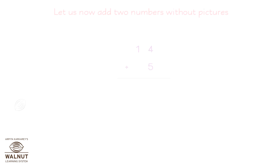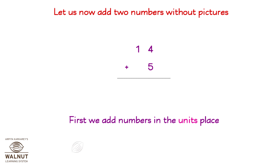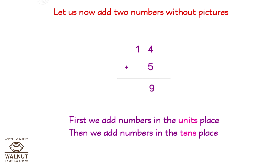Let us now add two numbers without pictures. Fourteen plus five. First, we add numbers in the units place: four plus five is nine. Then, we add numbers in the tens place: one plus nothing is one. So, the answer is 19.